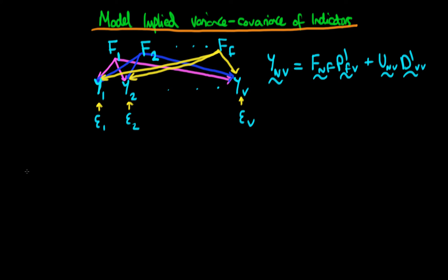In this video, we want to find the model-implied variance-covariance matrix for the indicator variables. And because there are v indicators, we know that this matrix should be v by v in terms of its dimension.